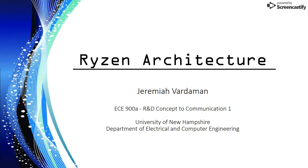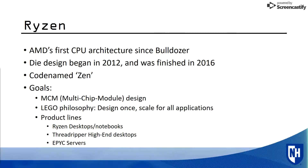Ryzen architecture, by Jeremiah Vardman. Ryzen was AMD's first CPU architecture since its Bulldozer design. The Ryzen die design began in 2012 and finished four years later in 2016. It was codenamed Zen.